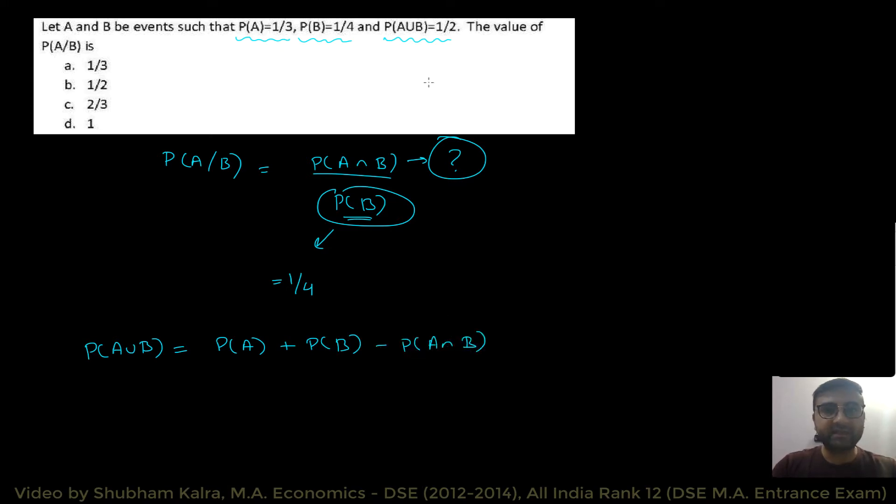So, we know that probability of A union B is equal to probability of A plus probability of B minus probability of A intersection B. And, we are given that probability of A union B is equal to 1 by 2. Probability of A is 1 by 3. Probability of B is 1 by 4. So, this is minus probability of A intersection B. This implies probability of A intersection B is equal to 1 by 3 plus 1 by 4 minus 1 by 2. And, if you take the LCM as 12, then you will get 4 plus 3 minus 6, which is equal to 1 by 12.